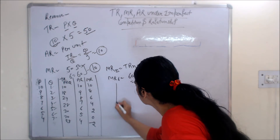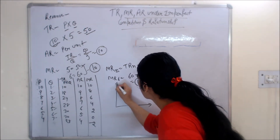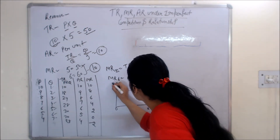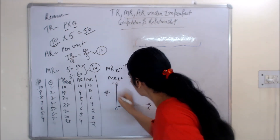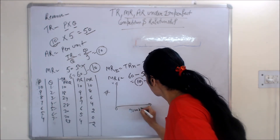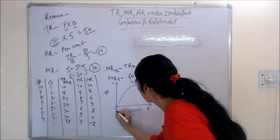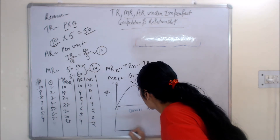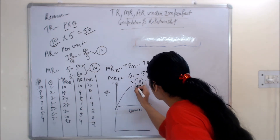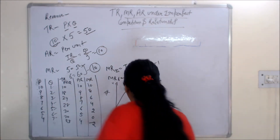Now we will draw the TR curve. This is TR on the vertical axis and quantity on the horizontal axis. The shape of TR in the imperfect market rises and then curves downward, forming an inverted U-shape.